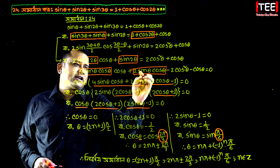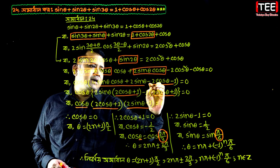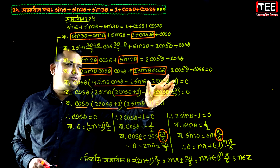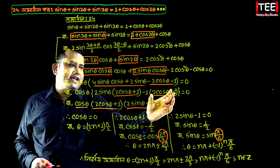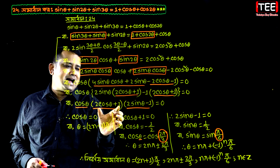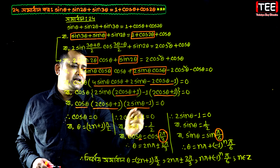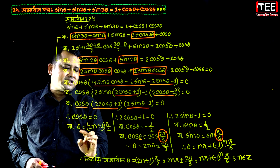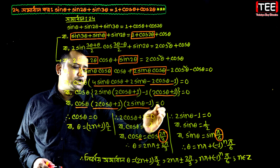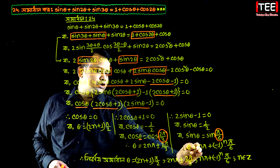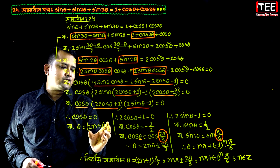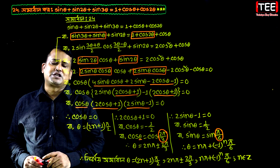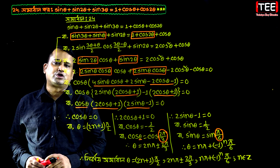2 theta equal to cos theta. 2 sin theta, cos theta common. Minus 2 cos theta, cos theta common. [Closing remarks in Gujarati.]